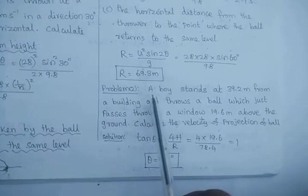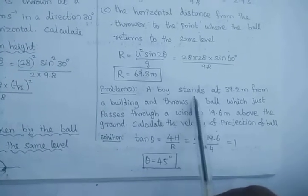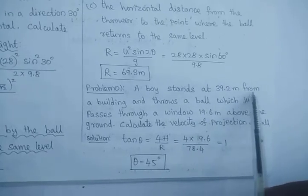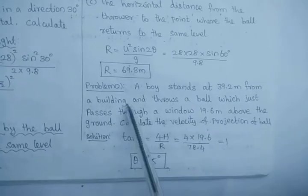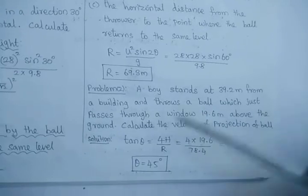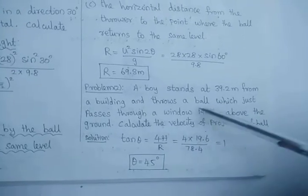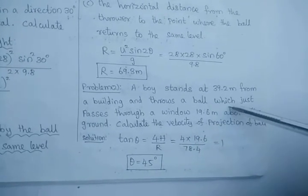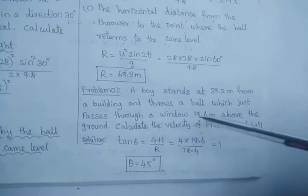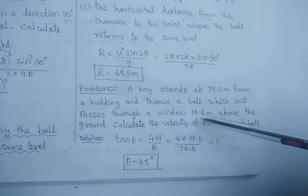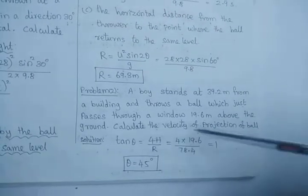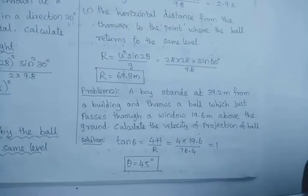Second problem: a boy stands at 39.2 meters from the building. The height of the building window is 19.6 meters above the ground. Calculate the velocity of the projectile.